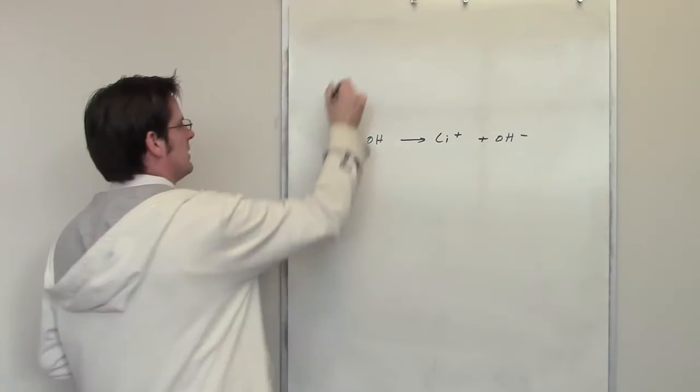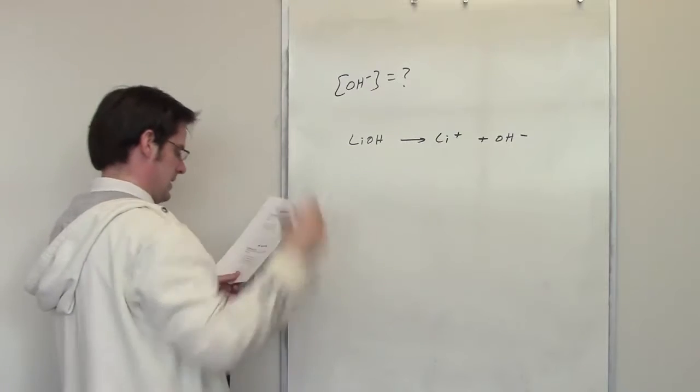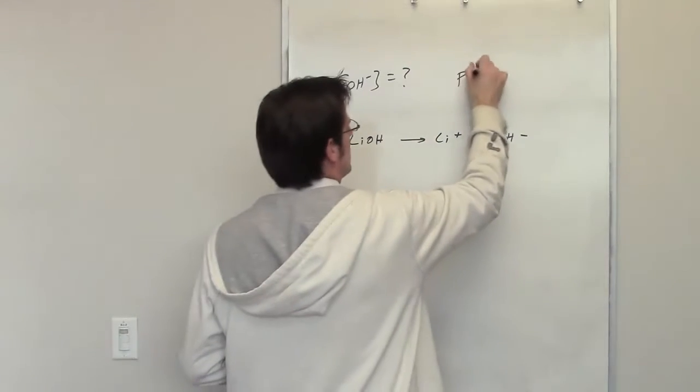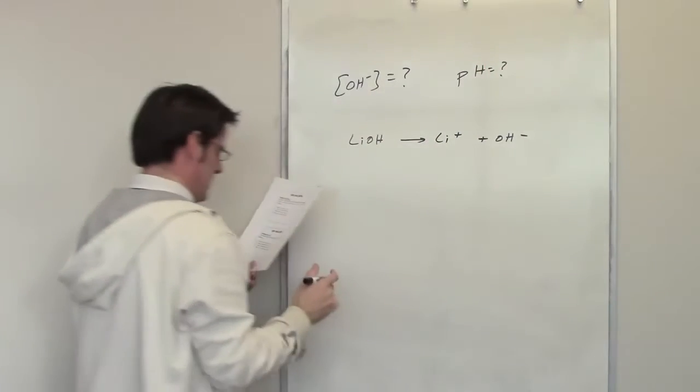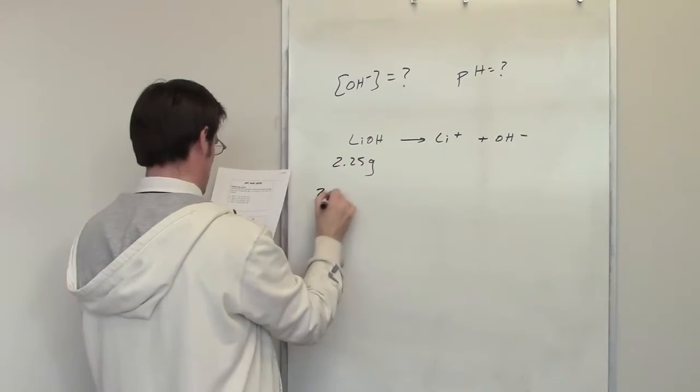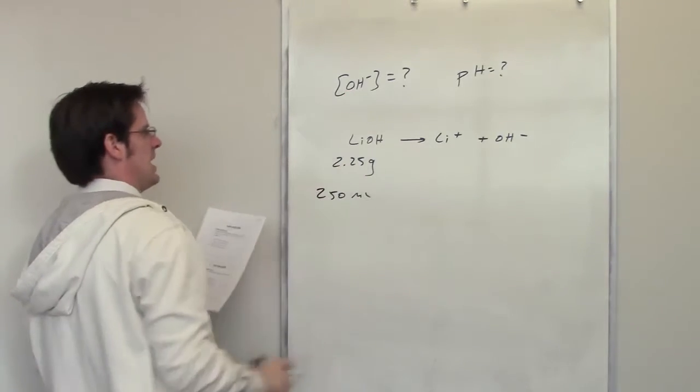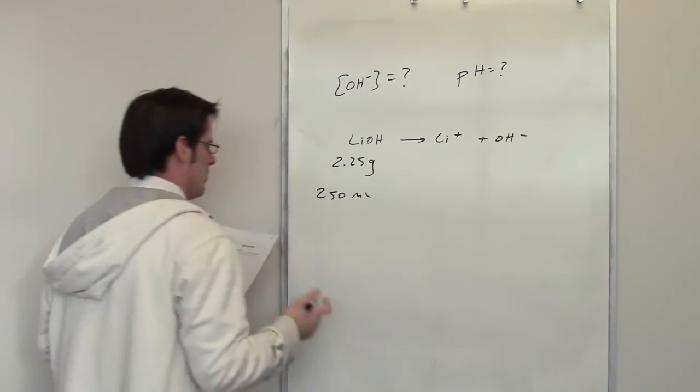I've been asked to calculate the hydroxide ion concentration and the pH. It tells me that I've got 2.25 grams of this in 250 milliliters of solution. How do I determine what the hydroxide ion concentration is? Well, that isn't too bad.